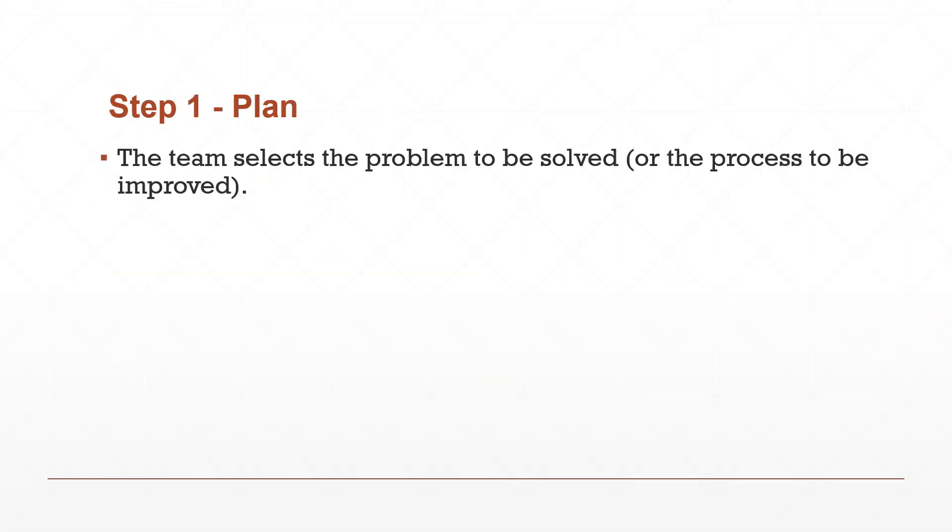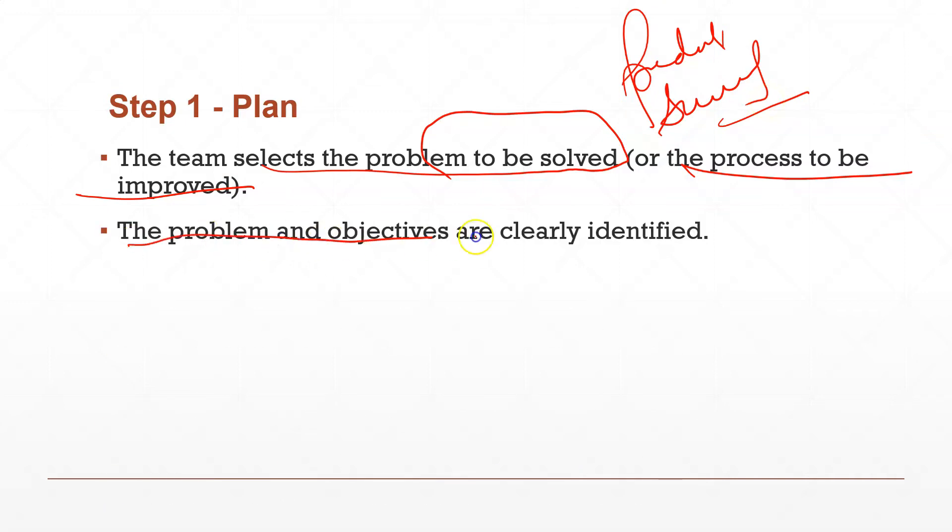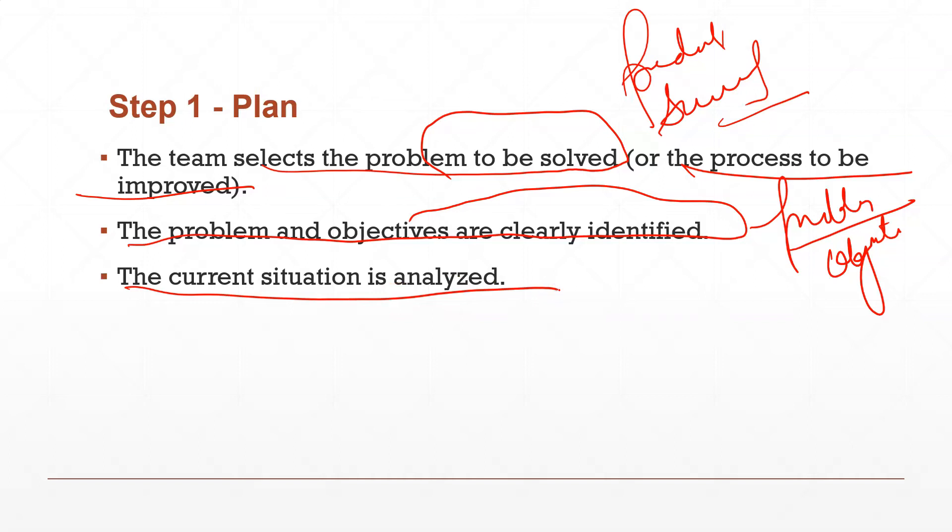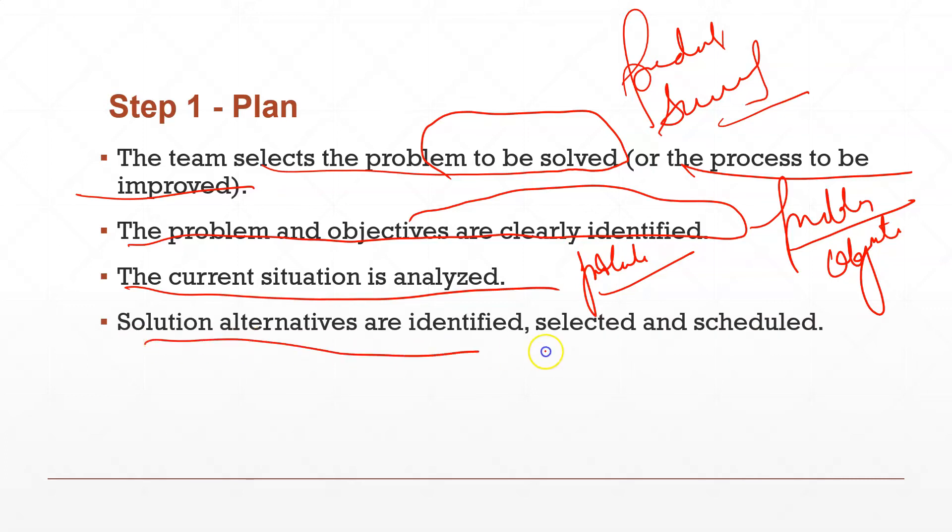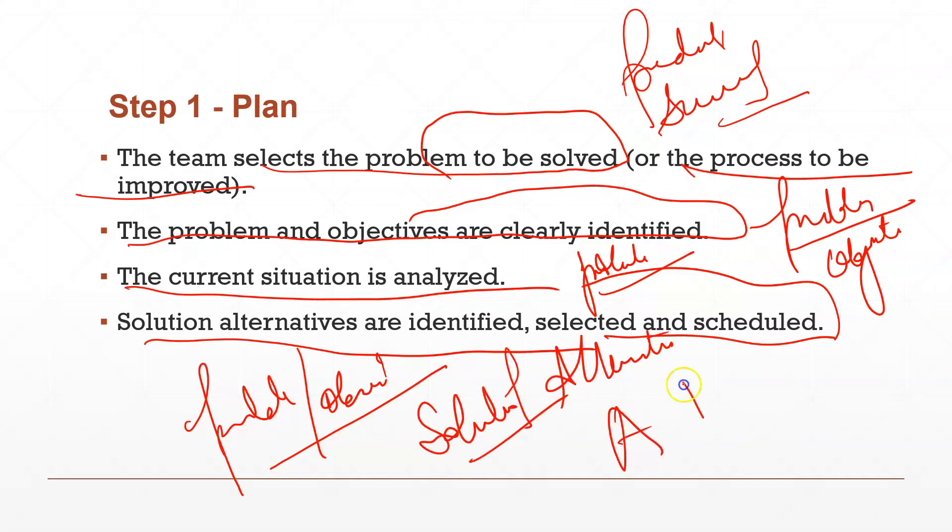Let's talk about the first step which is called Plan. In this step, the team selects a problem to be solved. First we need to select which problem we need to solve, which process we need to improve, which product we need to work on, or which service we need to work on. Second, the problem and objectives are clearly identified. After defining the problem, we also mention our objectives - what we need to do with the problem. Then the current situation is analyzed. We analyze the current situation to understand what problem is appearing. Because until we understand the problem properly, we cannot find a solution. Solution alternatives are identified, selected and scheduled. After you find the problem and set your objectives, you try to find solutions. You create solution alternatives - solution A, B or C - which solution is best suited and which can solve our problem.